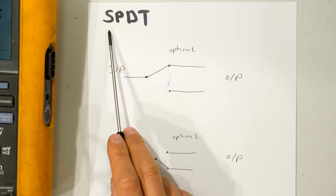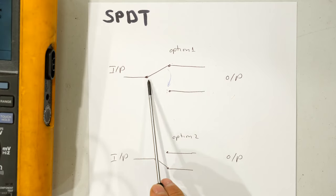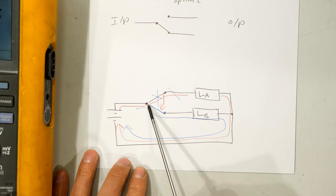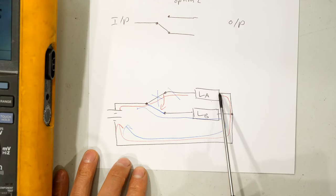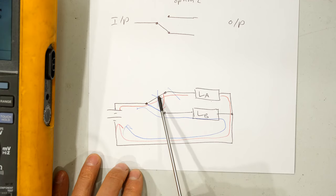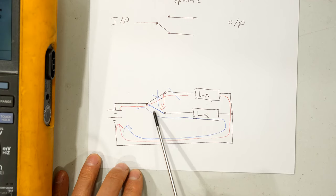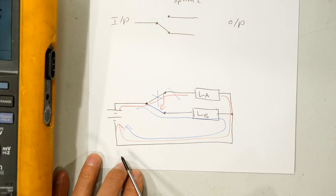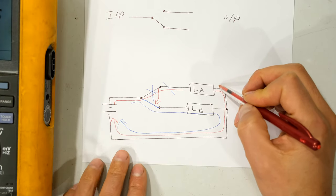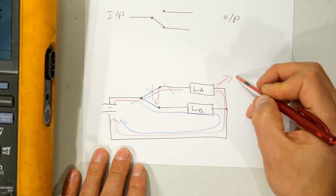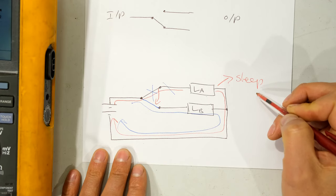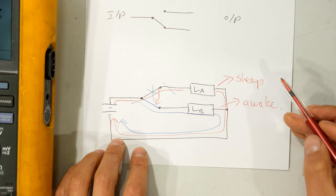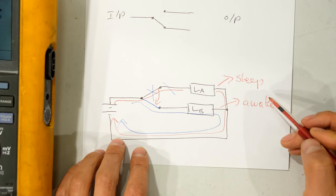To sum up the single pole double throw: we can throw the link to either output. We can either close load A and current will flow, or we can move the lever to the other circuit and close load B with current flowing, while load A becomes disconnected. A common use of this switch is in one position you might want a sleep mode — maybe an LED indicating sleep mode — and when you press it into the other mode that is the awake mode. This is a common feature on a photocopying machine, for example.